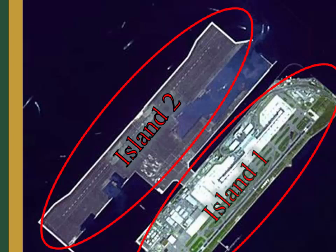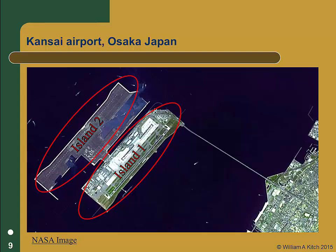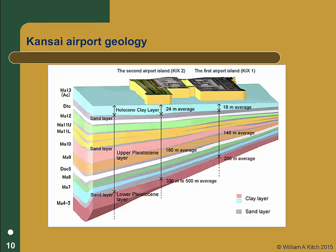The second island was constructed to add an additional runway to the airport to increase capacity. Construction started in July 1999, fill was completed in October 2005, and the second runway opened in August 2007. The total fill height of the second island is 40 to 43 meters. Osaka Bay is underlain by very deep deposits of marine clays and sands. The depth to bedrock at the location of the islands is over 1,000 meters.